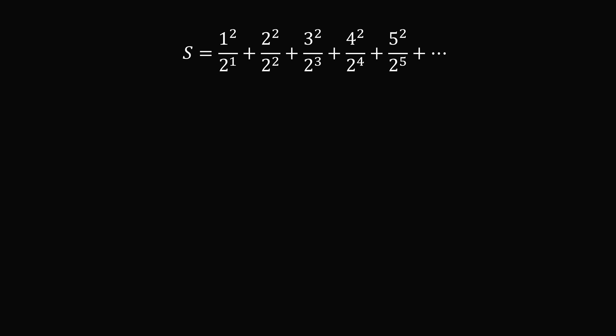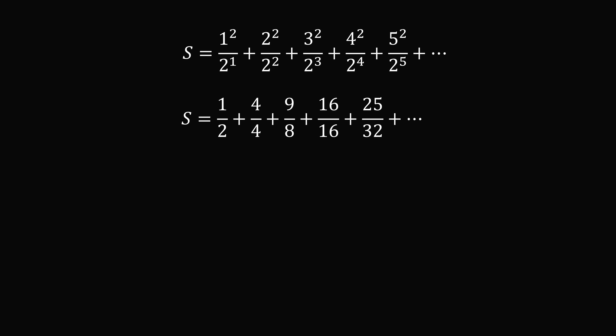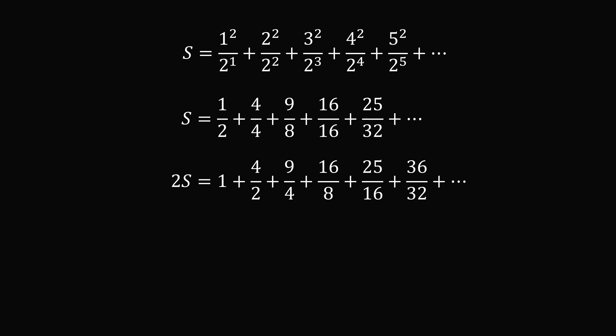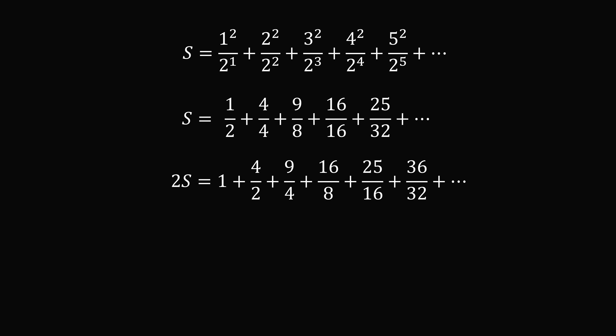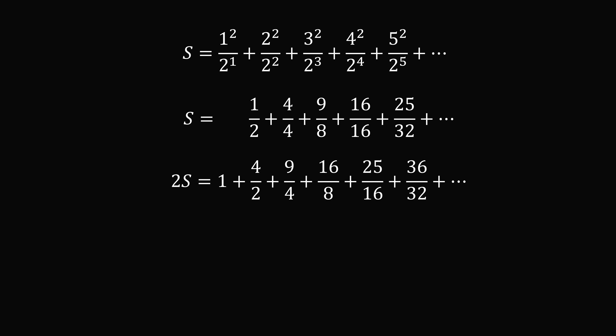The first method we'll use to solve the problem is to find a pattern. We have this sum. Now let's write each of the square terms out. Now let's multiply this entire series by 2, term by term. We can do this because we know we have a convergent series. Now let's line up the denominators. We'll subtract the top equation from the second equation, term by term.